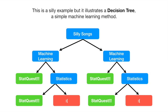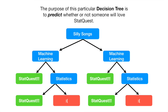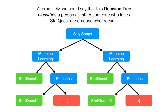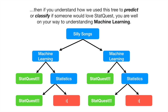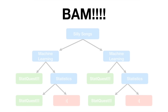This is a silly example, but it illustrates a decision tree — a simple machine learning method. The purpose of this particular decision tree is to predict whether or not someone will love StatQuest. Alternatively, we could say that this decision tree classifies a person as either someone who loves StatQuest or someone who doesn't. Since decision trees are a type of machine learning, if you understand how we use this tree to predict or classify if someone would love StatQuest, you are well on your way to understanding machine learning. Bam!